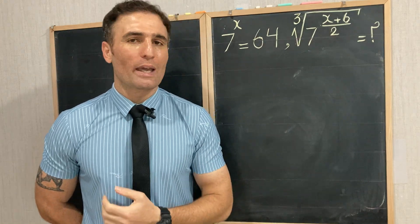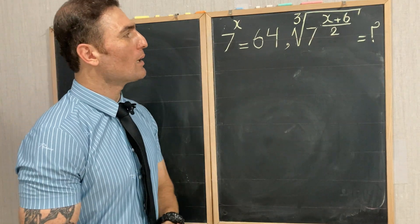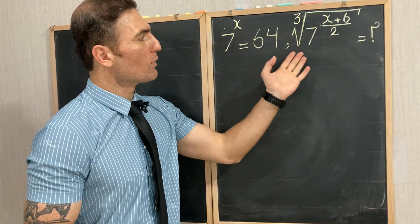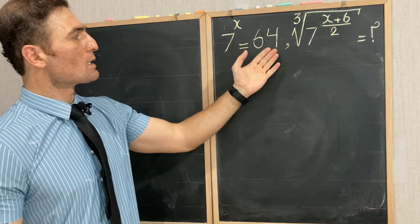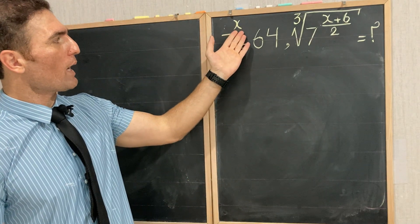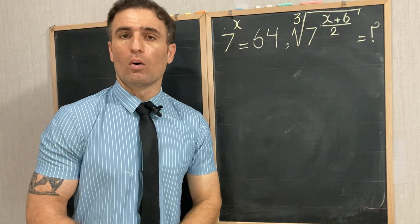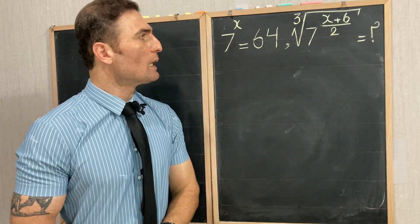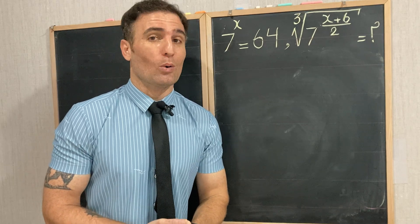What is the question and how can we solve it? The question says: find the value of this expression, given that 7 to the power of x is 64. Where should we start? Should we find the value of x and put it in the cube root expression, or can we find the value of the expression without knowing the value of x? Let's try.